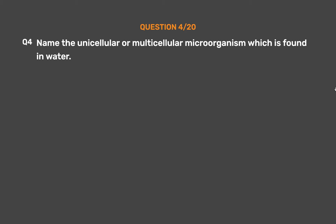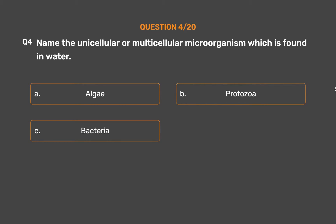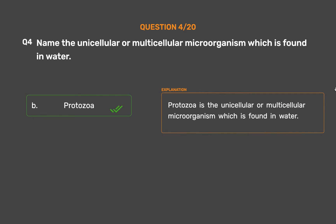Question number 4. Name the unicellular or multicellular microorganism found in water. Option A: Algae. Option B: Protozoa. Option C: Bacteria. Option D: Fungi. The correct answer is Option B, Protozoa. Protozoa is the unicellular or multicellular microorganism found in water.